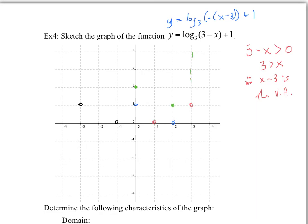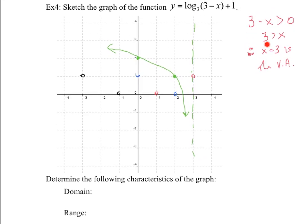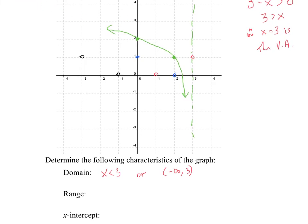So determine the characteristics of the graph. The domain is x < 3, or in interval notation (−∞, 3), not included. The range: notice the graph continues to go up slowly and goes all the way to the bottom, so the range of pretty much any logarithmic function is (−∞, ∞), or y is an element of all real numbers.